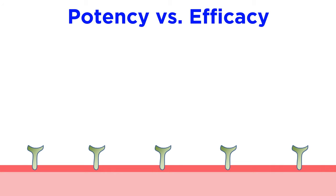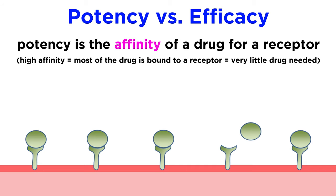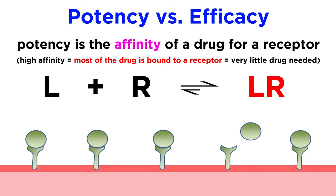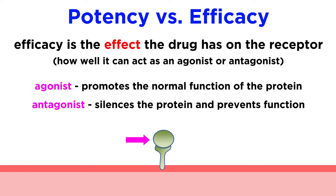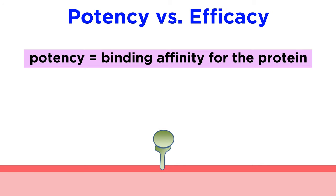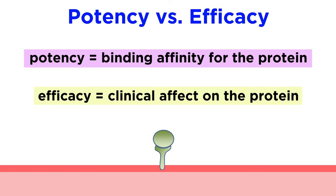Now that we understand affinity, we can conceptualize potency and efficacy in a slightly different way, using receptors as an example. Potency is the affinity of a drug for a particular receptor — if the affinity is very high, most of the drug will be bound at any given time, and thus very little of the drug will be needed to occupy all the receptors. Efficacy describes the effect the drug has on the receptor once it is bound, or the degree of its ability to act as an agonist or antagonist. So potency is related to affinity, whereas efficacy is related to the clinical effect of the drug.